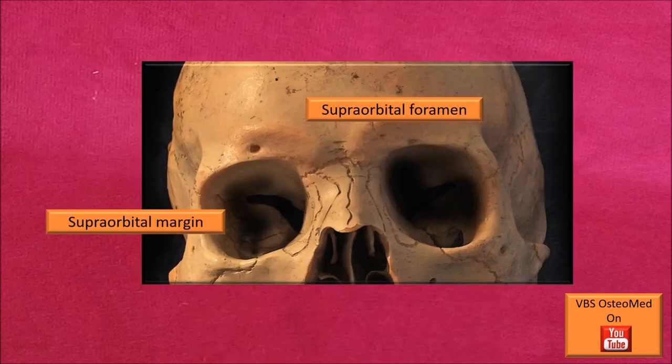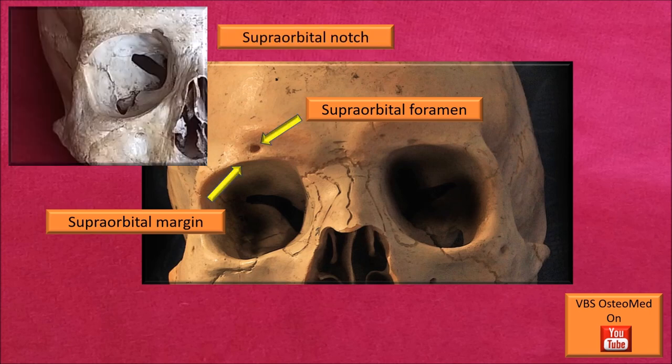Close to the orbital margin, there is a supra-orbital foramen. The upper orbital margin is called the supra-orbital margin. Along that margin, there may be either a foramen — called the supra-orbital foramen — or sometimes there will be a notch, as in this case.